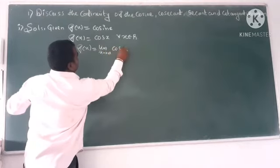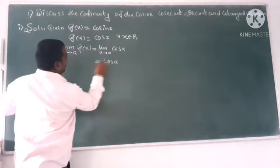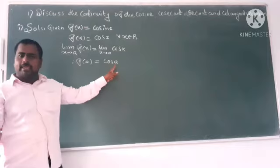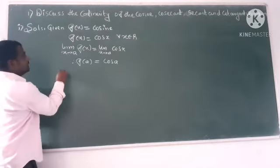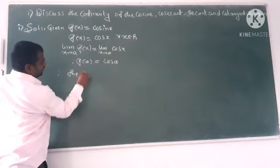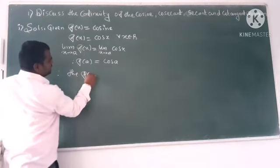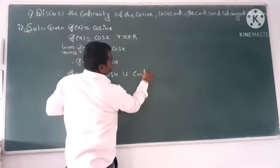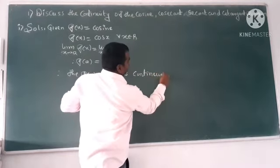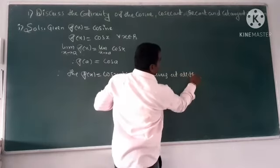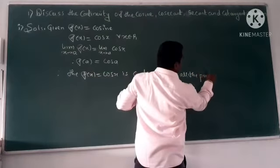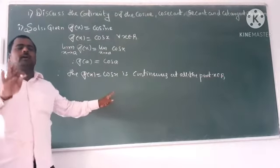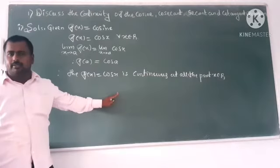So limit x tends to a of f of x, so here apply limit x tends to a, cos x. So this is cos a. Therefore f of a is equal to cos a. So here that the task function f of x is equal to cos x is continuous at all the points x belongs to R. Hence, it is a continuous function. Clear everyone?